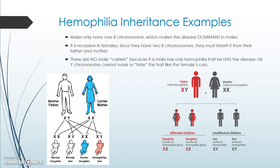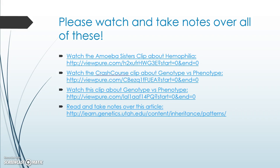Hemophilia causes a severe clotting disorder — the inability to clot blood, which can cause people to bleed out. Because males only have one X chromosome, the disease acts as dominant in males — there's nothing to mask it. But females, with two X chromosomes, must inherit a recessive allele from both parents to be affected. This means there are no male carriers of hemophilia; if a male has the trait, he has the disease. Females can be carriers without knowing and pass it on to their children. Please do further research, watch the provided video clips, and read the article for more detail.